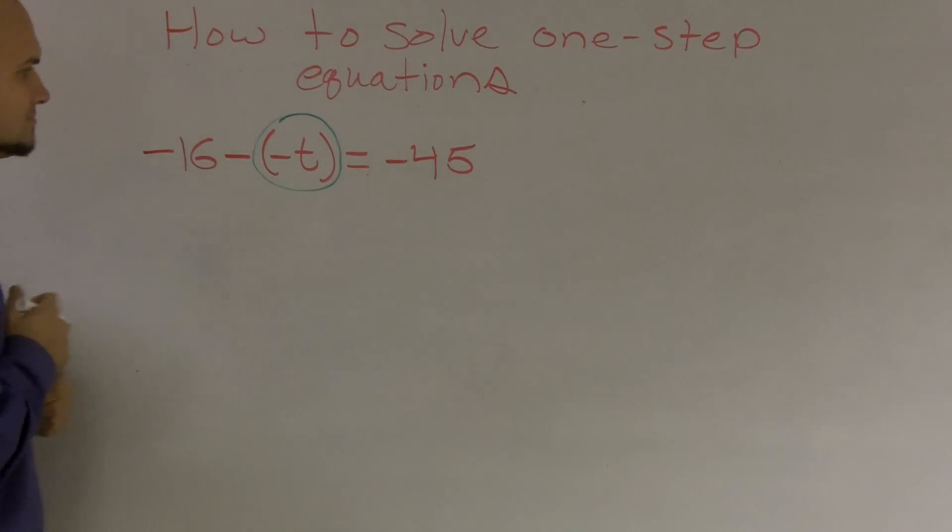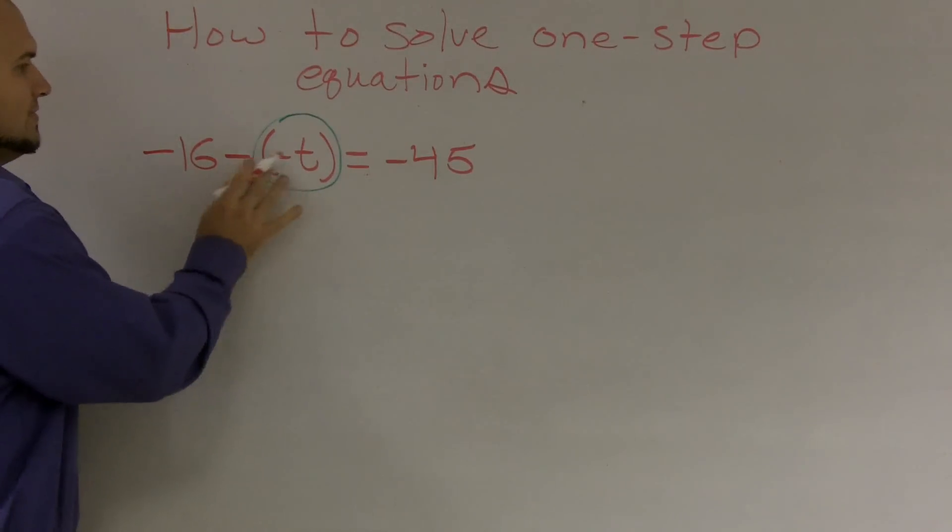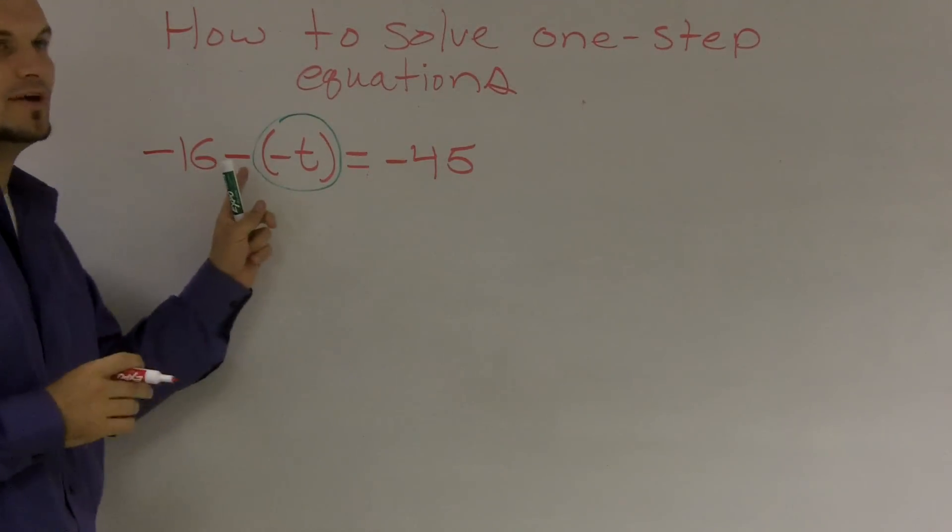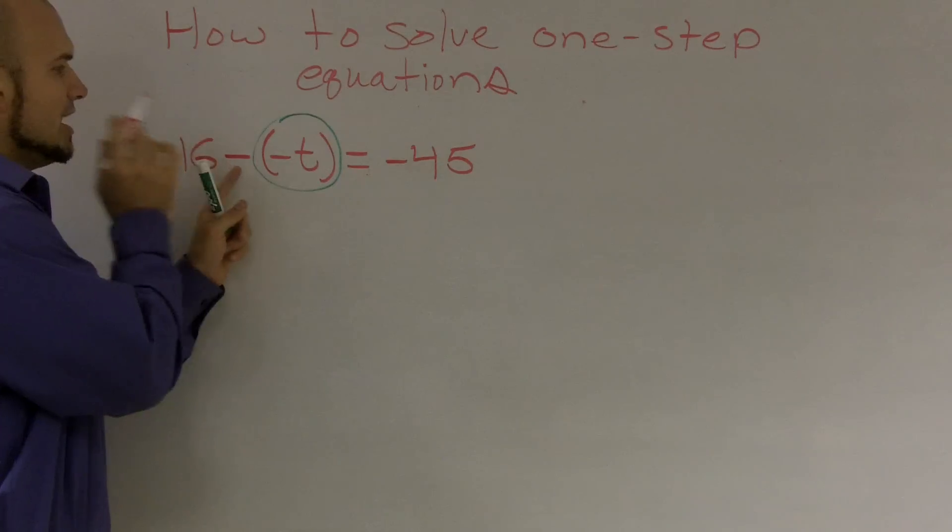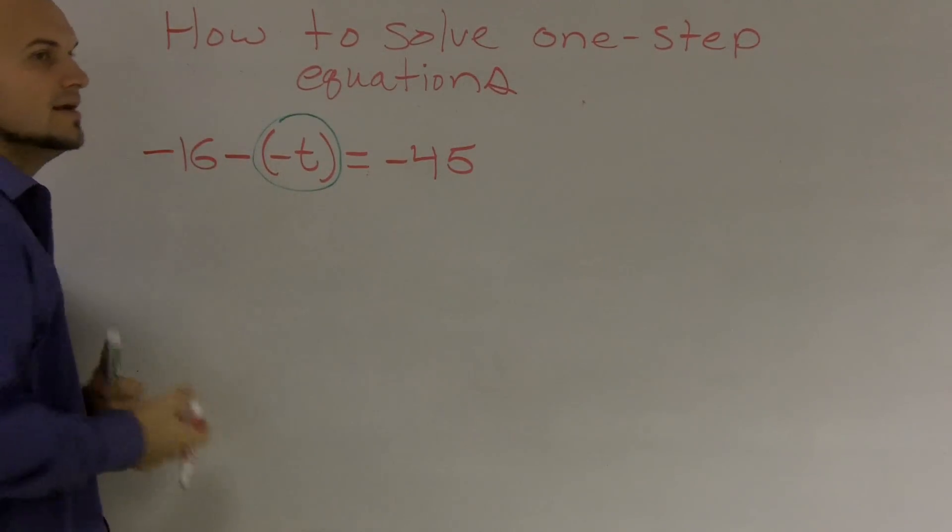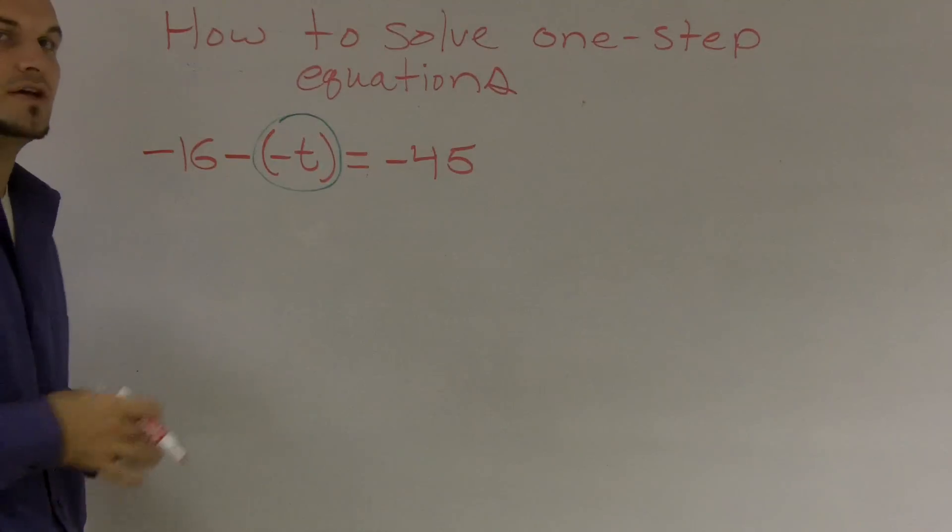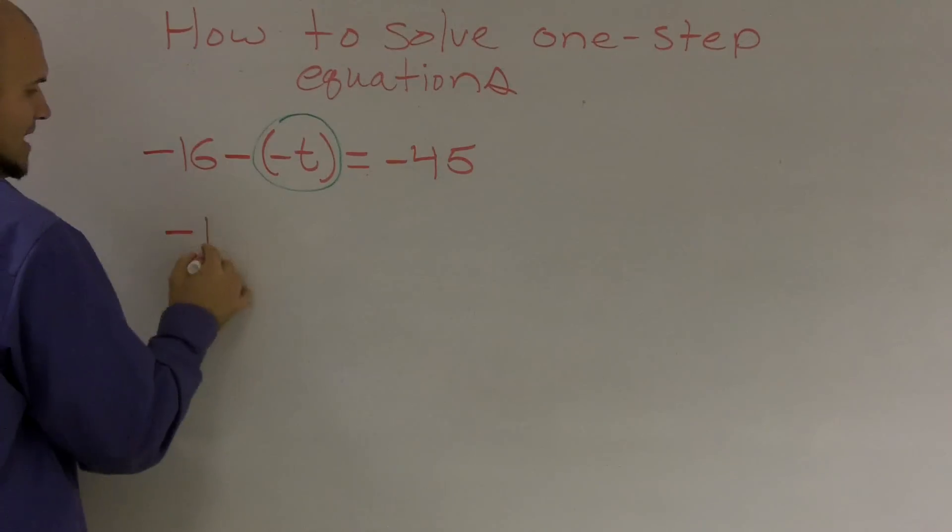The next thing I need to look at is what is actually happening to this variable. Well, one thing I notice is this variable is being subtracted. Negative t is being subtracted from negative 16. However, I'm also noticing that two negative signs are right next to each other. So to simplify this, I know that the two negatives are going to cancel out to make it positive.